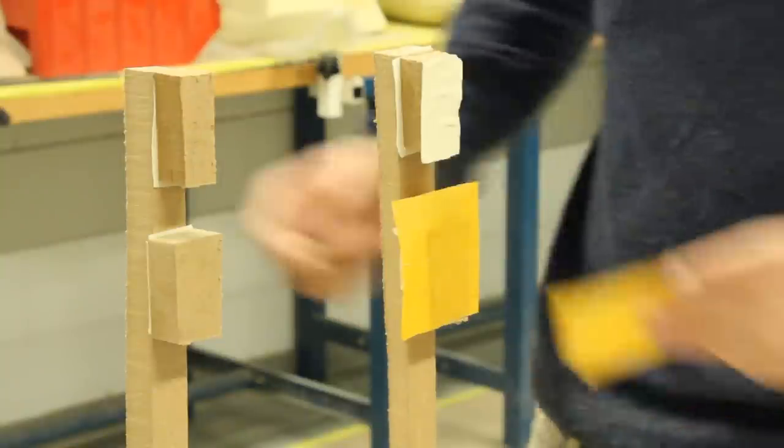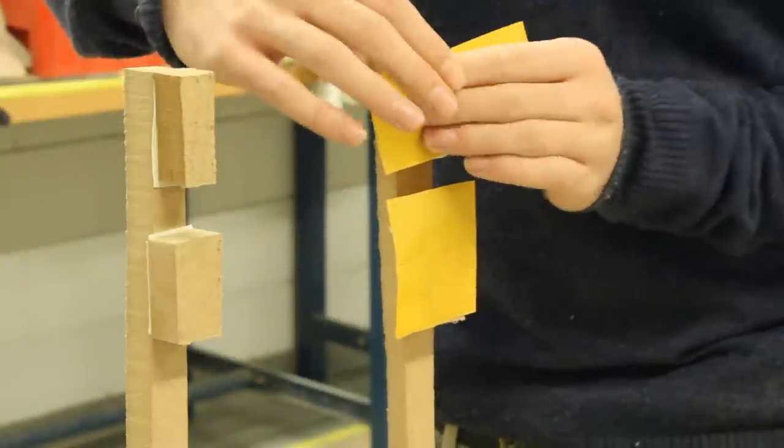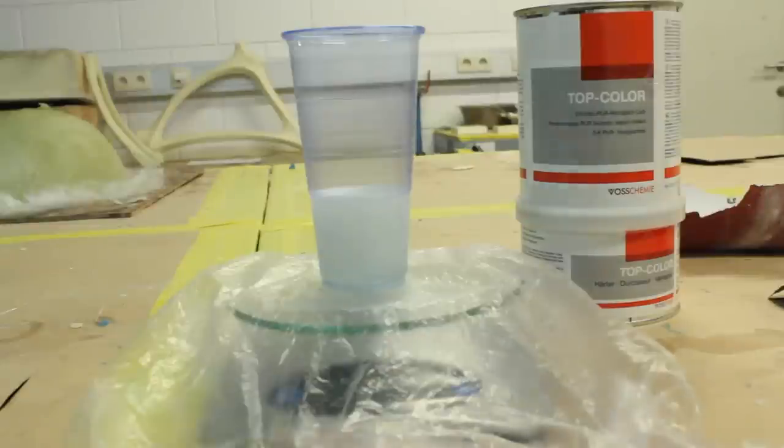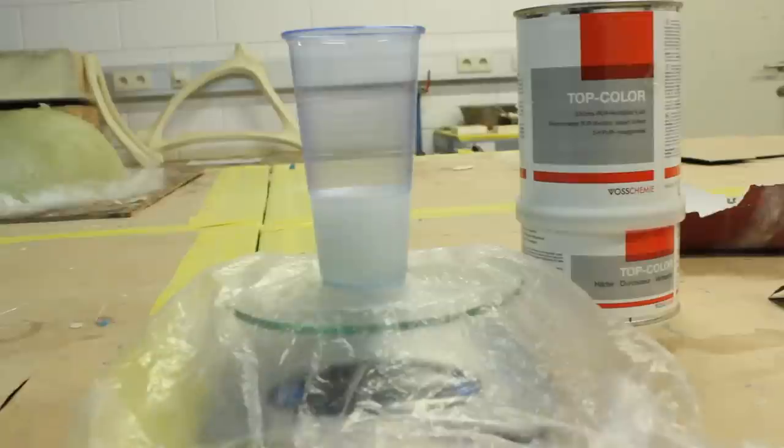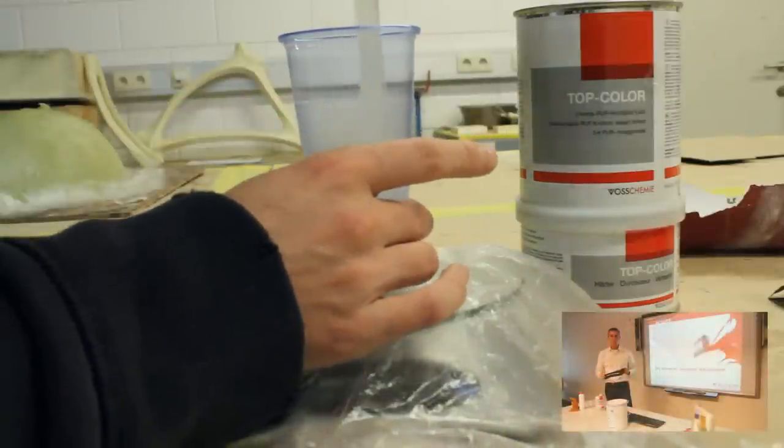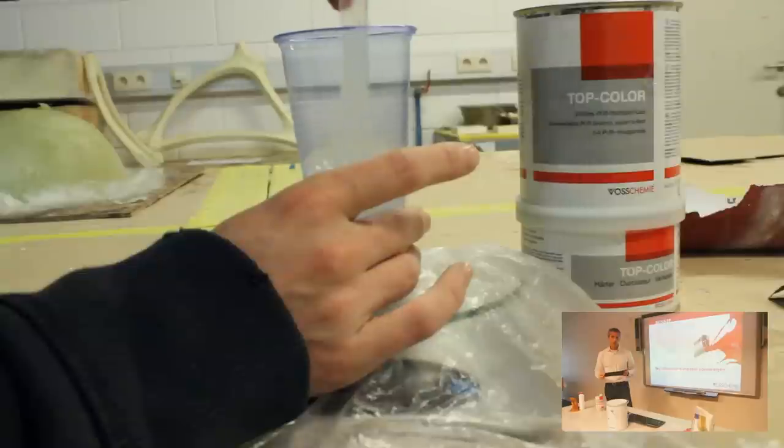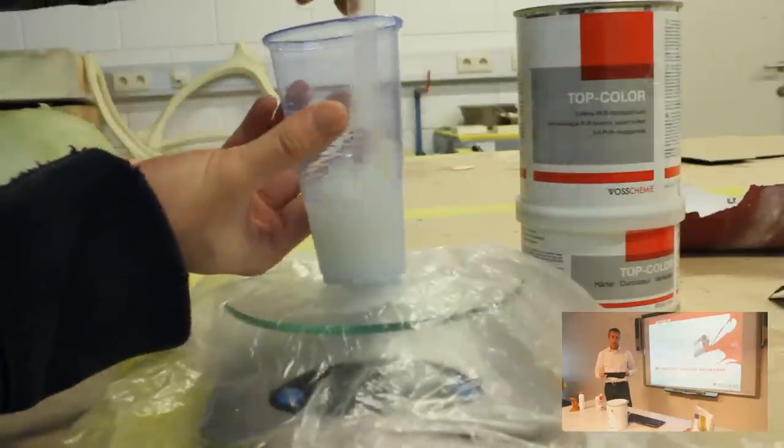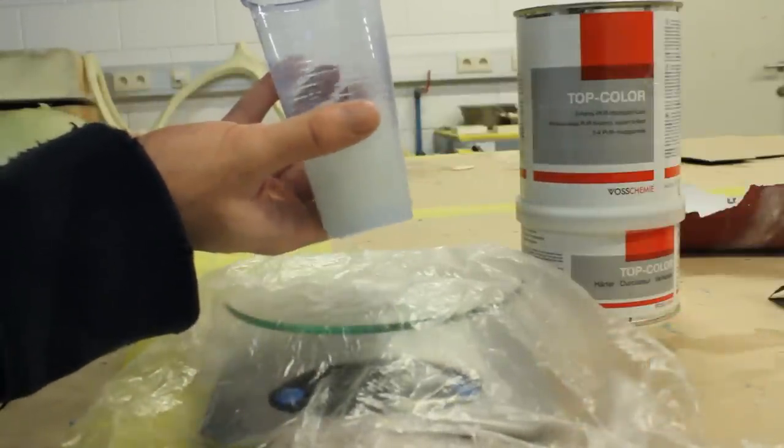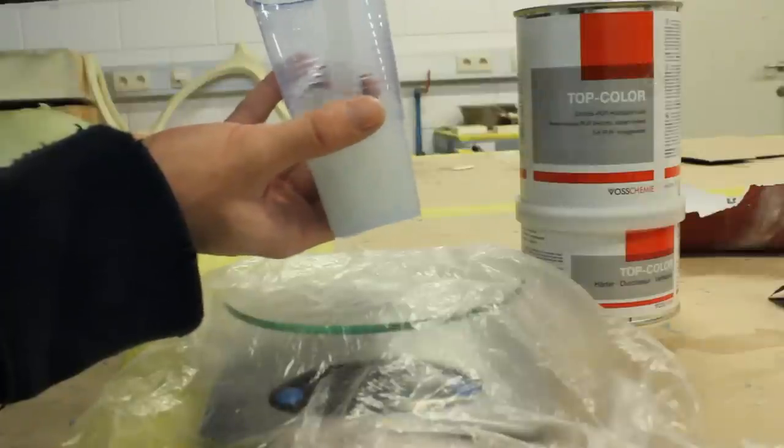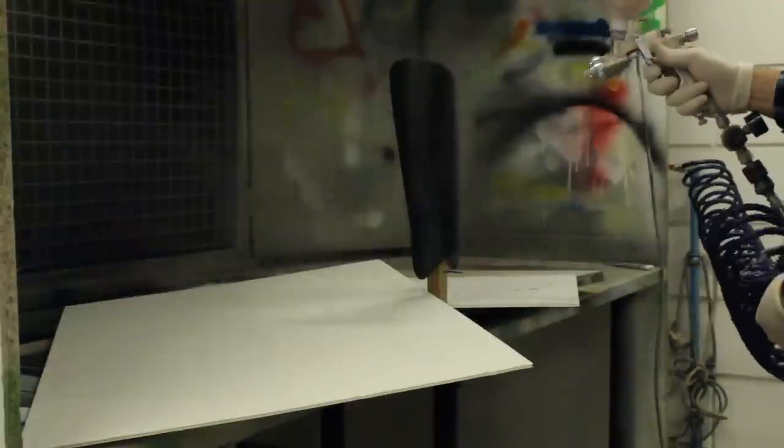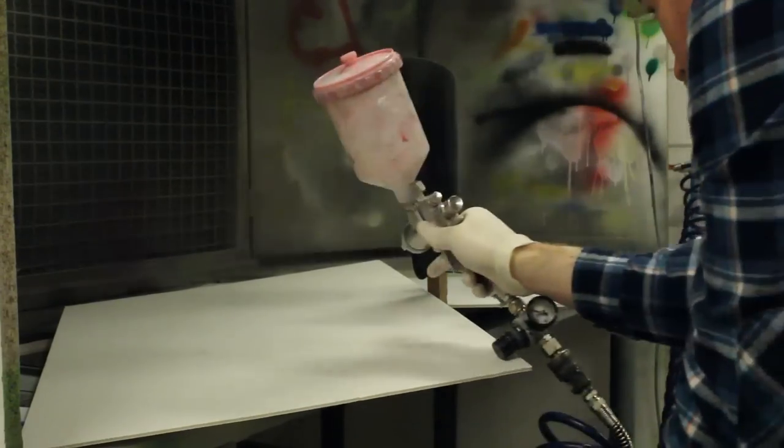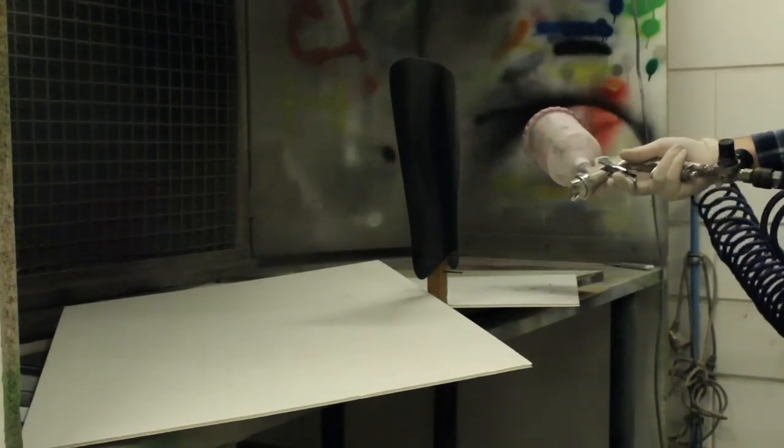Here I'm using the Top Color from Vosshemi. If you click on the annotation on the right, you can find more information about the product from the introduction. You have to mix it one by one, then parts from the top and then from the bottom.